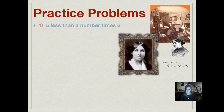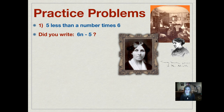Practice problem number one: five less than a number times six. There are no commas here, so this problem looks a little different. The answer is 6n − 5. Because there's no comma, we write 6n — remember, putting the number right next to the letter means six times n — and then subtract five from that amount.